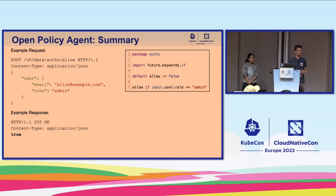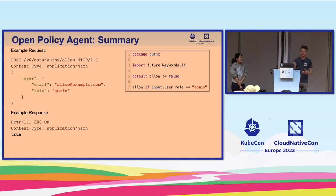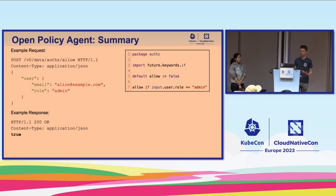In the server use case, you make a POST request to one of the endpoints on the REST API on the OPA server with some data. The policy is evaluated as part of that request and the response is in this case a boolean value true. You can imagine if the role were a different value or the role were missing, that would be a different response.